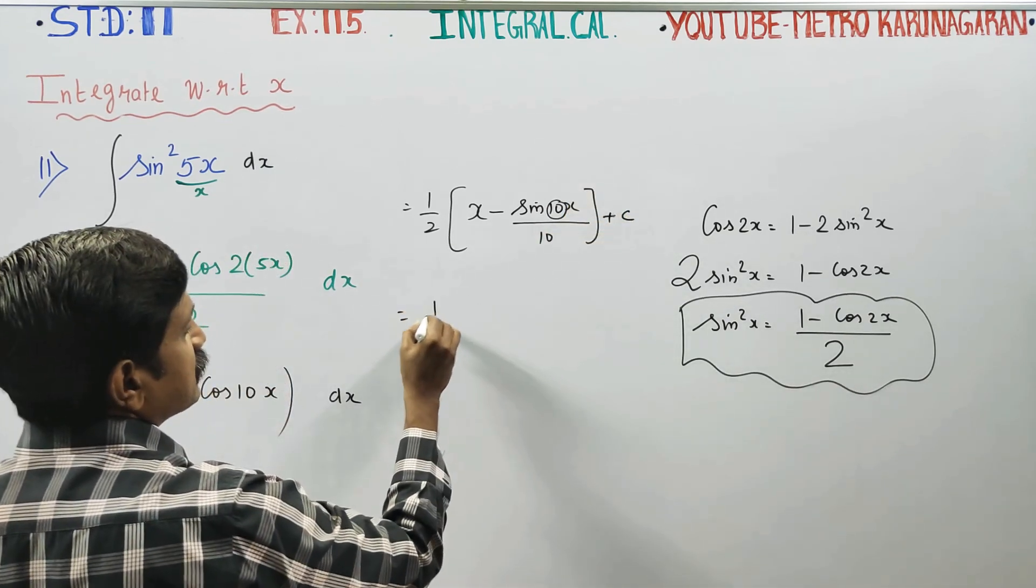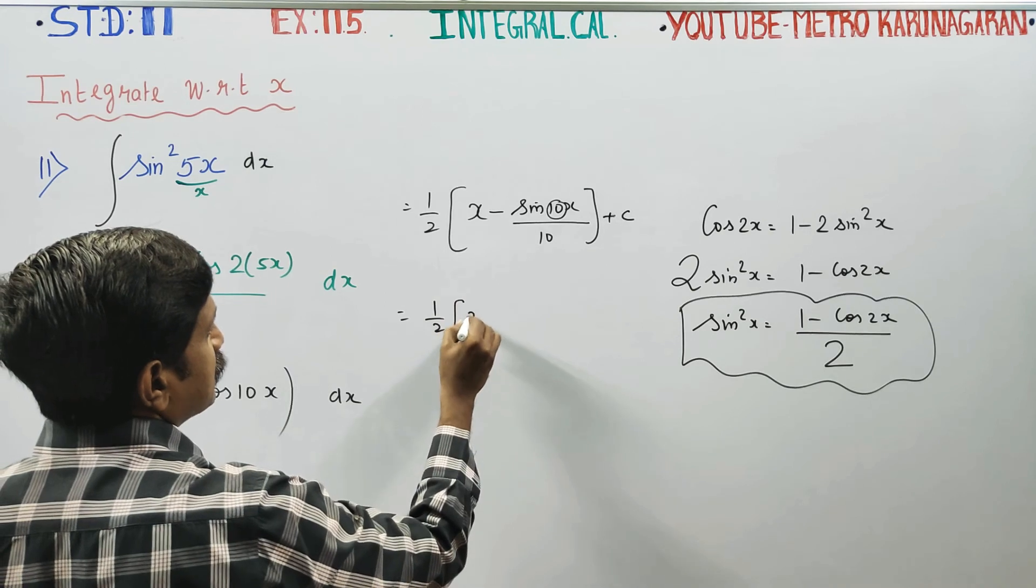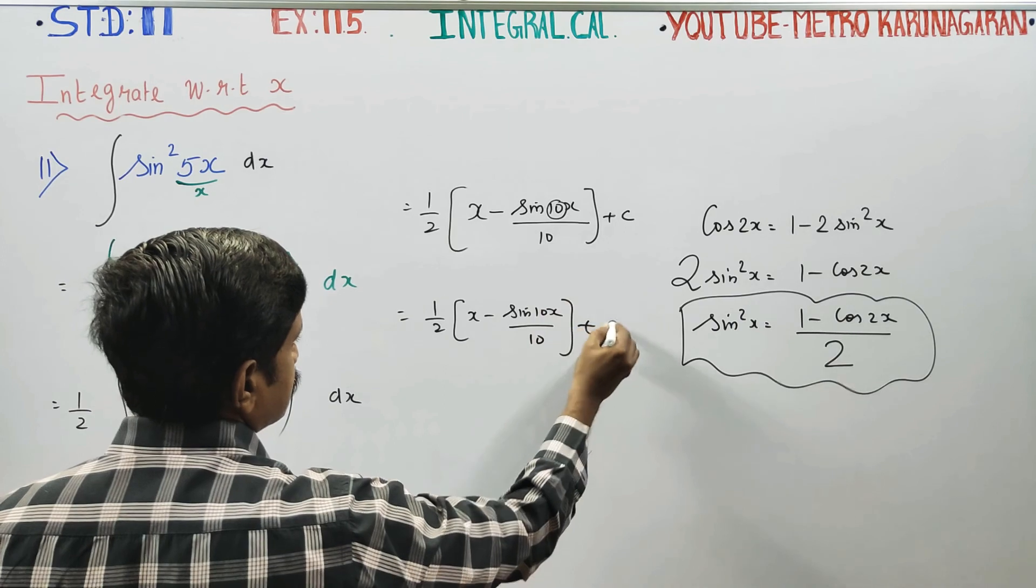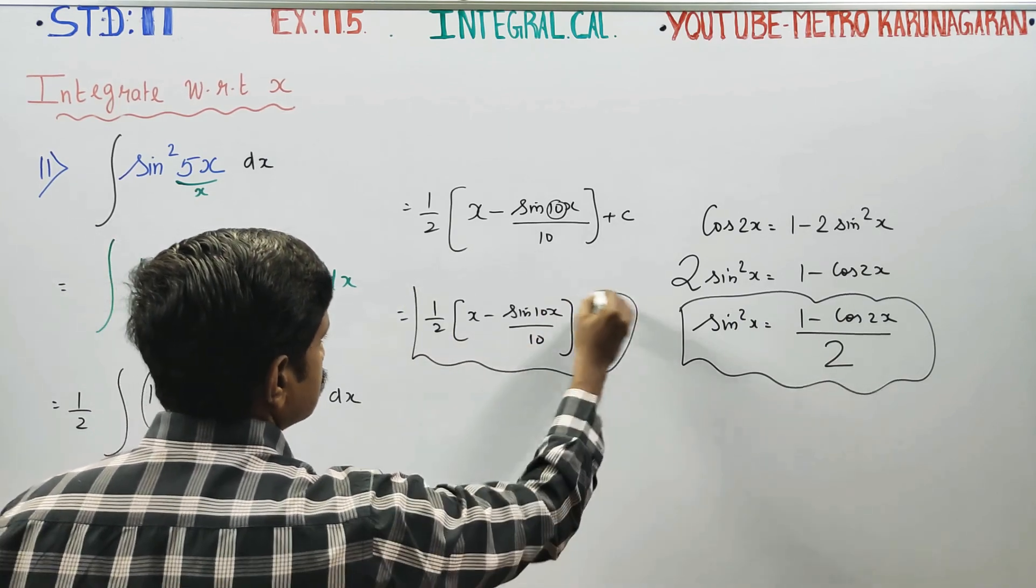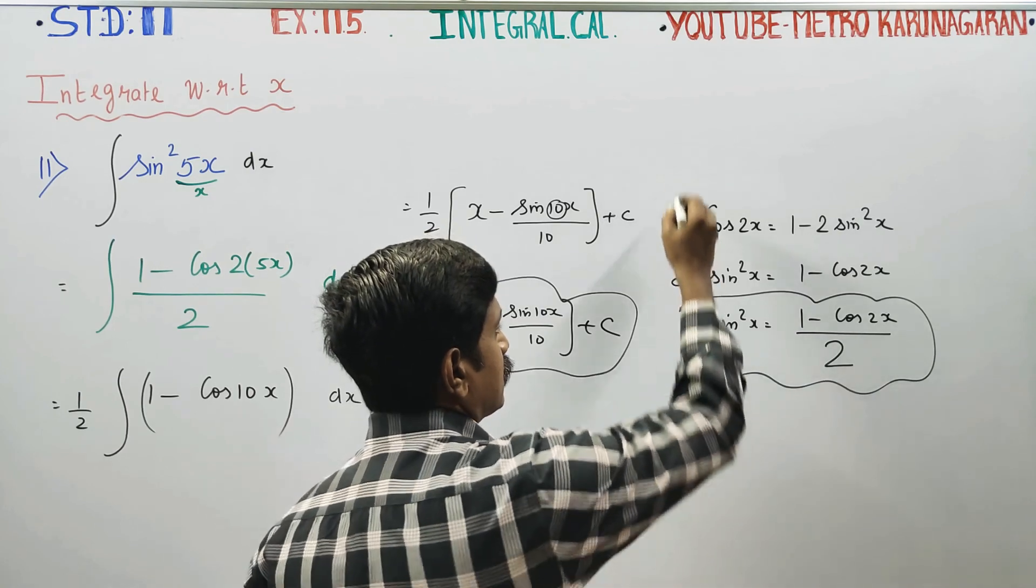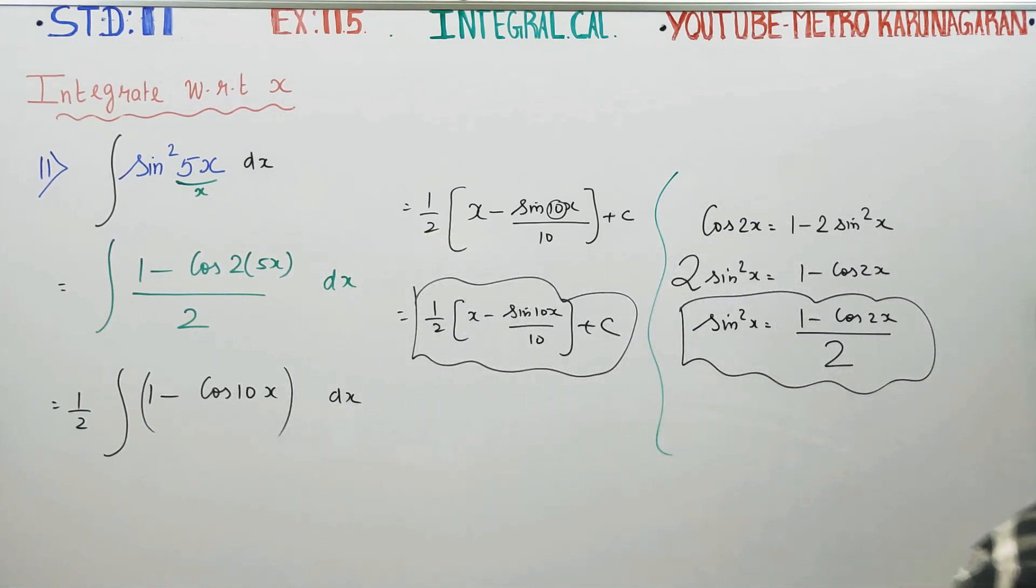This is your final answer. 1 by 2 into x minus sin 10x by 10 plus c is your final answer. Apo in the sum up purithu orika in the formula da. You look recall panna no. This is from our double angle formula of trigonometry. Okay. Thank you.